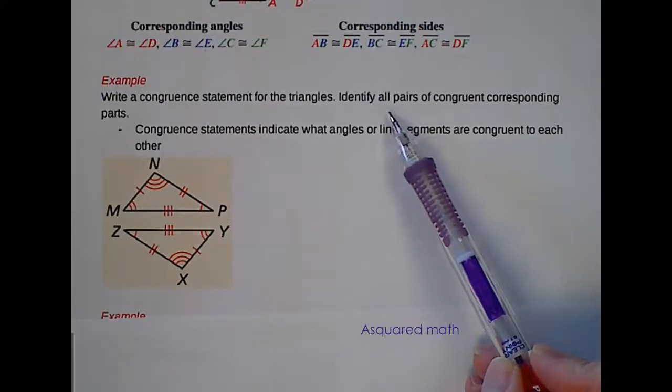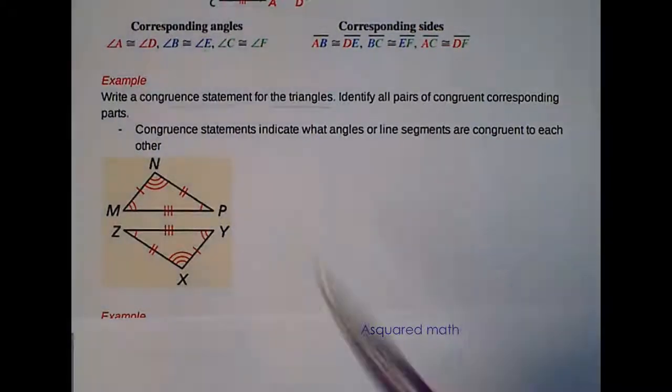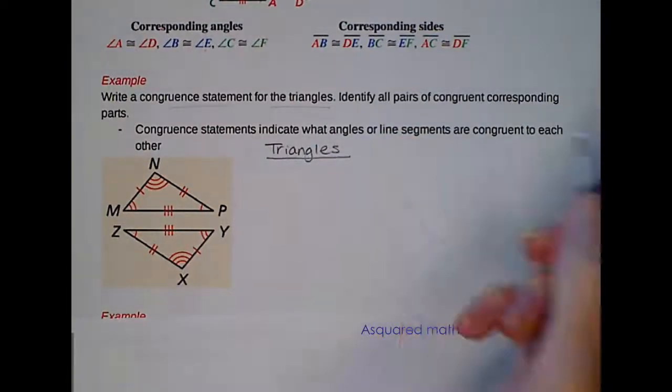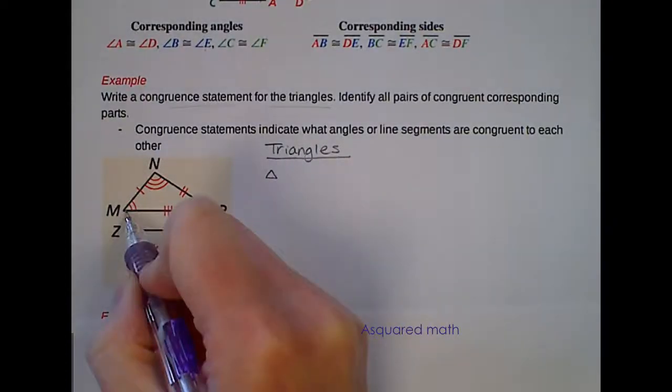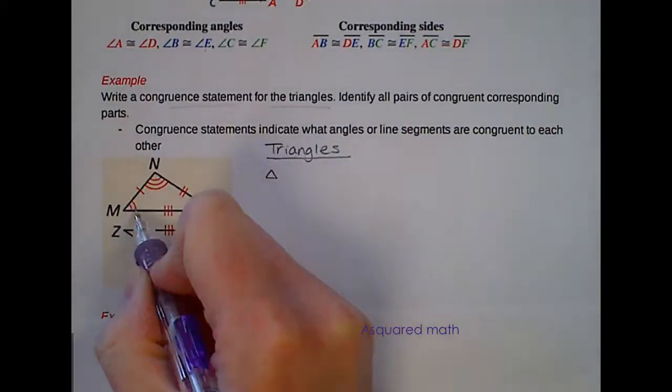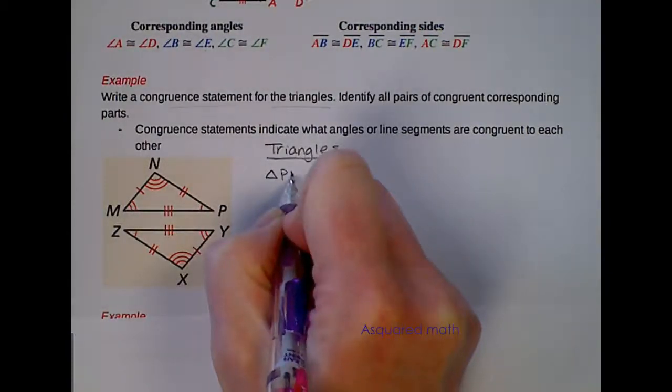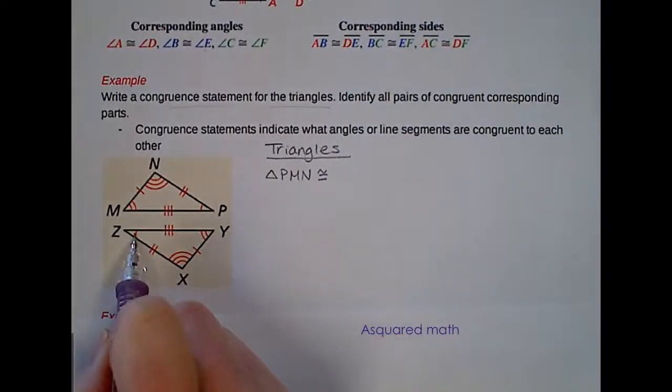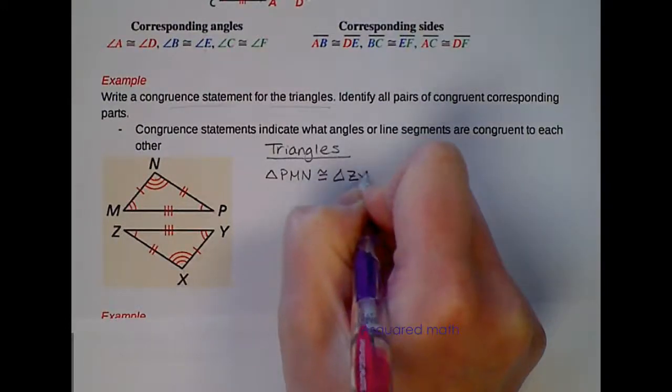The first thing we're going to do is write that congruent statement for the triangles. Let me title that triangle so you know the difference between all of them. I'm going to name this top triangle PMN. It's going to be congruent to ZYX. Single marking, double, triple. So triangle ZYX.